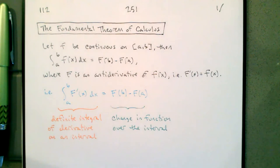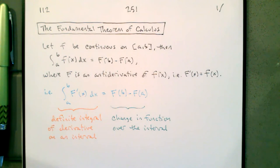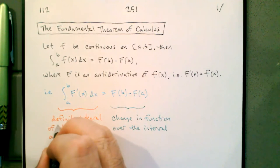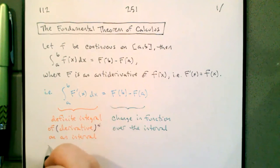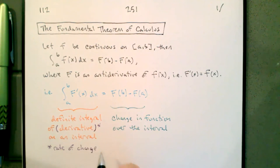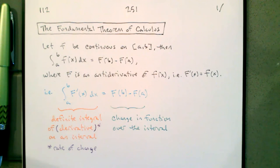It's how much the function has changed on the interval from a to b — it's the difference between f at b, where we ended up, and f at a, where we started. Remember that a derivative we can also say is rate of change. So the definite integral of a rate of change on an interval is the change in the function over the interval. This is going to lead us to how to interpret the definite integral.